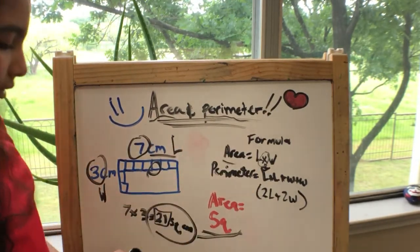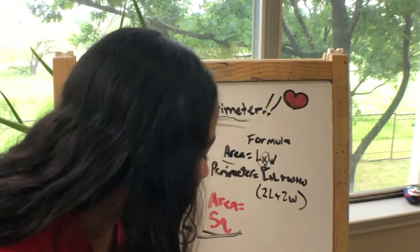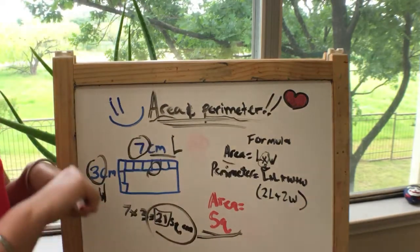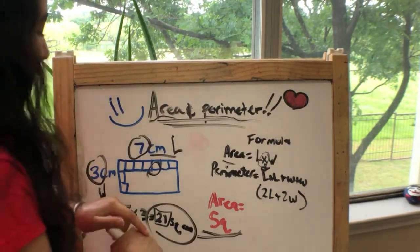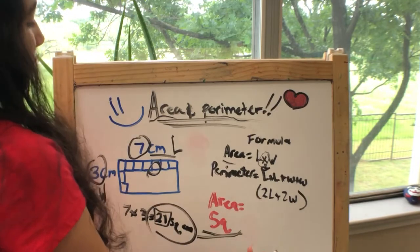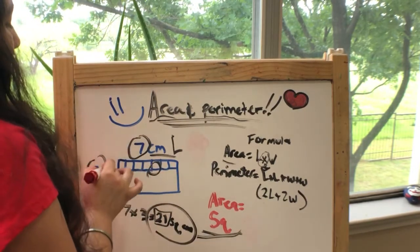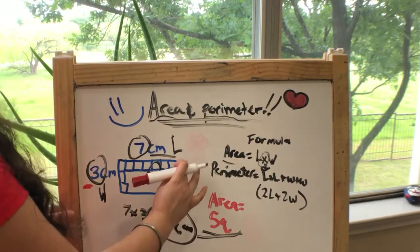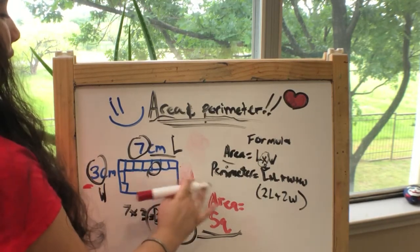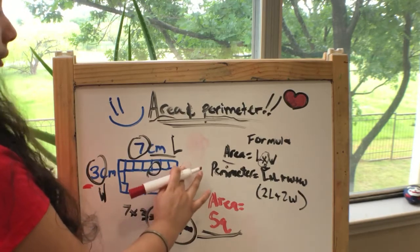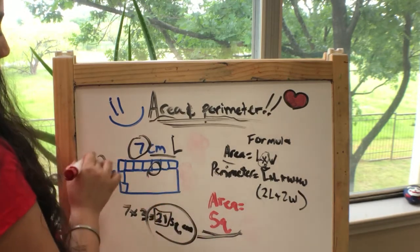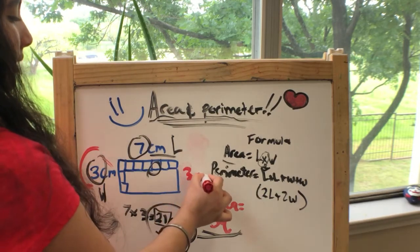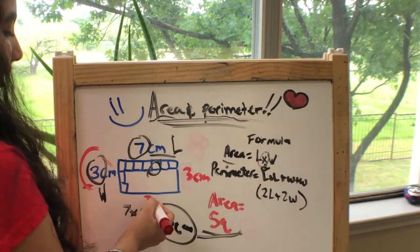Now we're gonna do perimeter. Let's see, this and this side here are equal to each other, they're congruent and parallel. That means this side is the exact same as this side, so three centimeters. And this side is the same as that side.